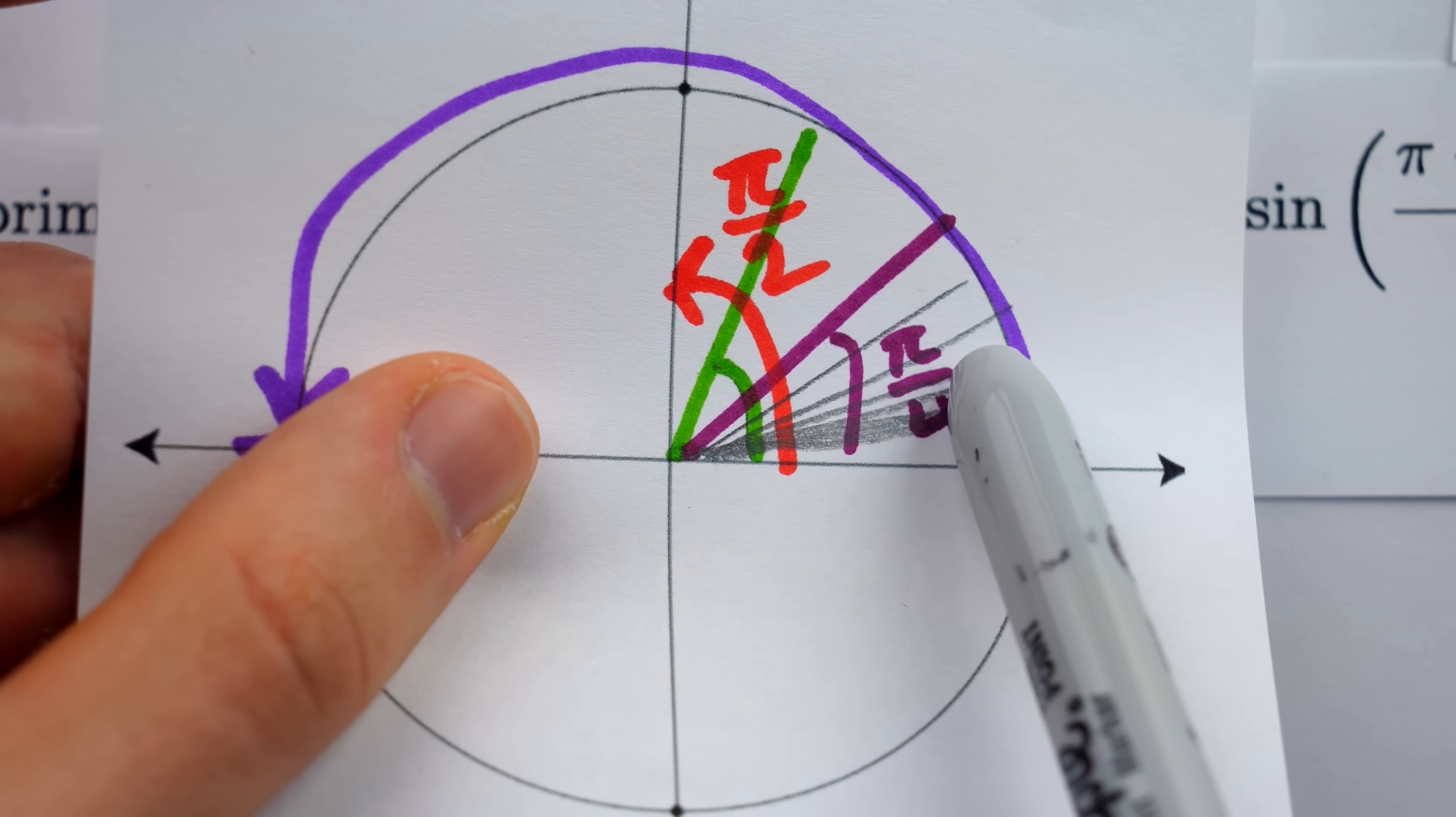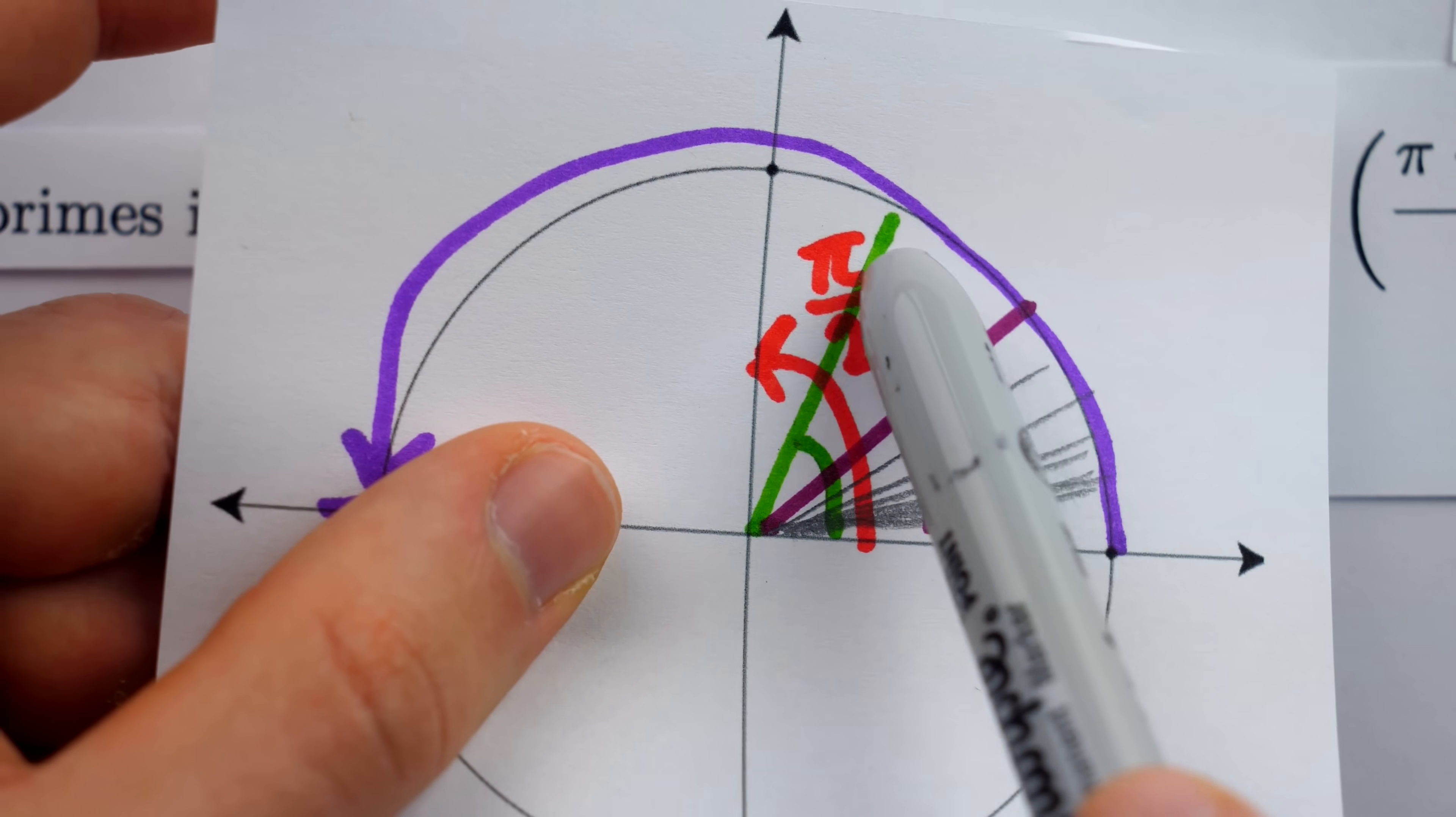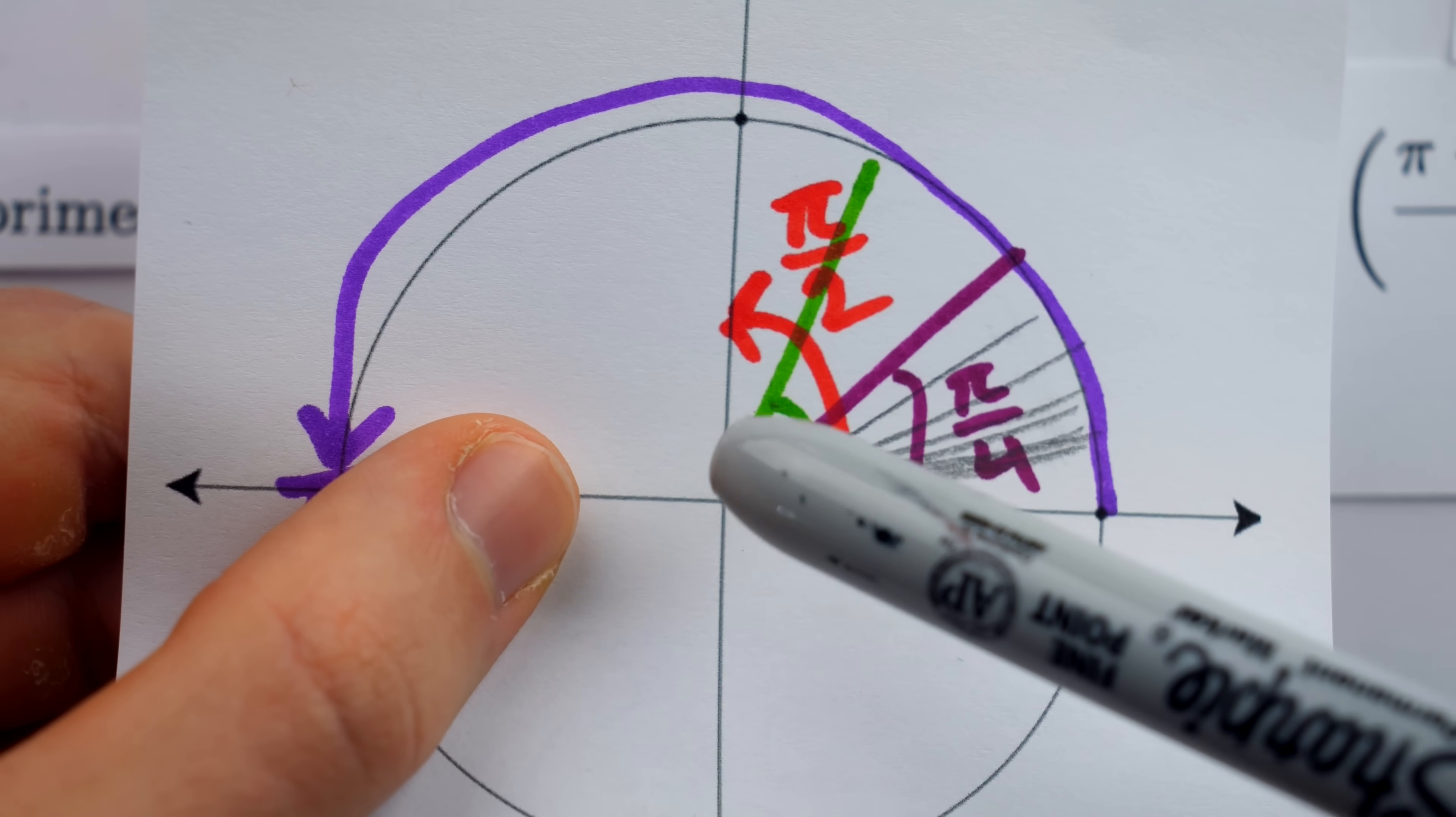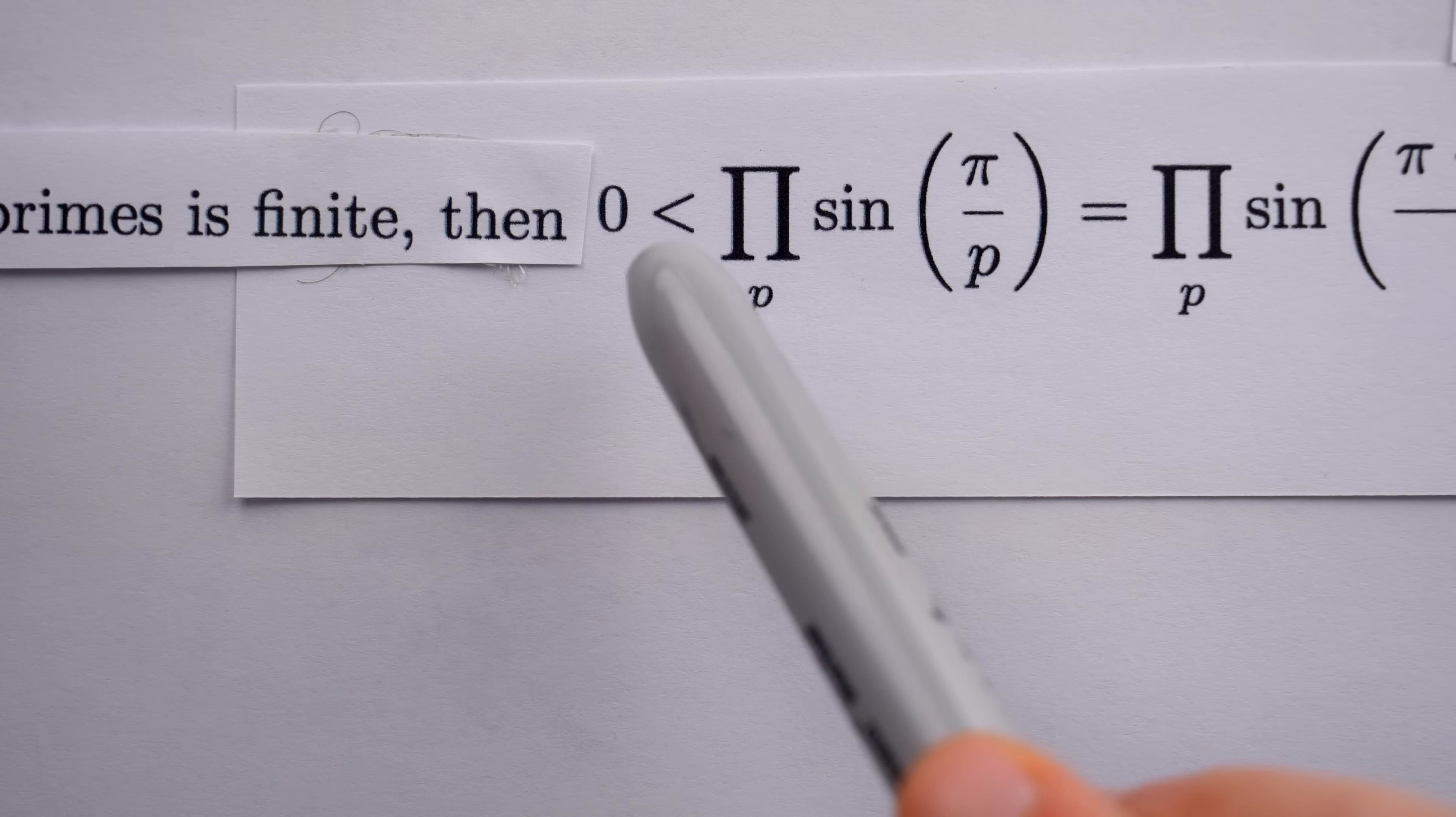So they're all somewhere in here where the y values, and hence the sine values, are positive. These are all angles greater than no rotation at all, but less than or equal to a quarter rotation. So all of these sine values for sure are positive, thus the product is greater than zero.